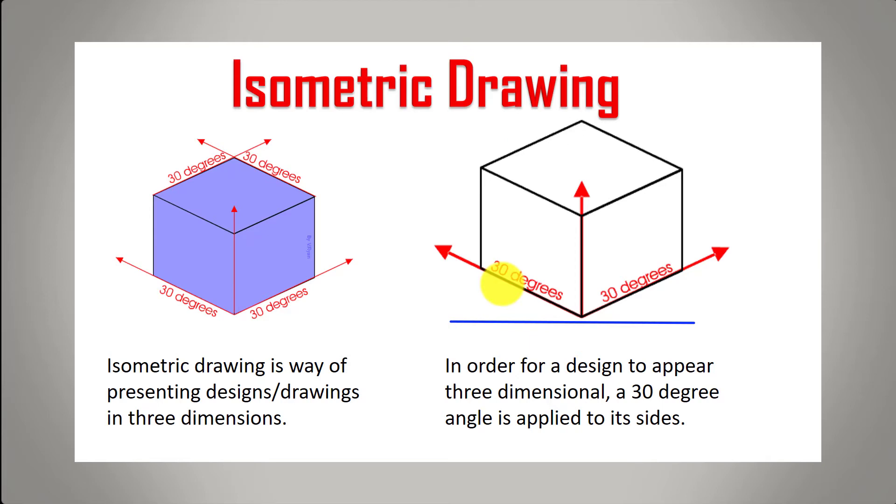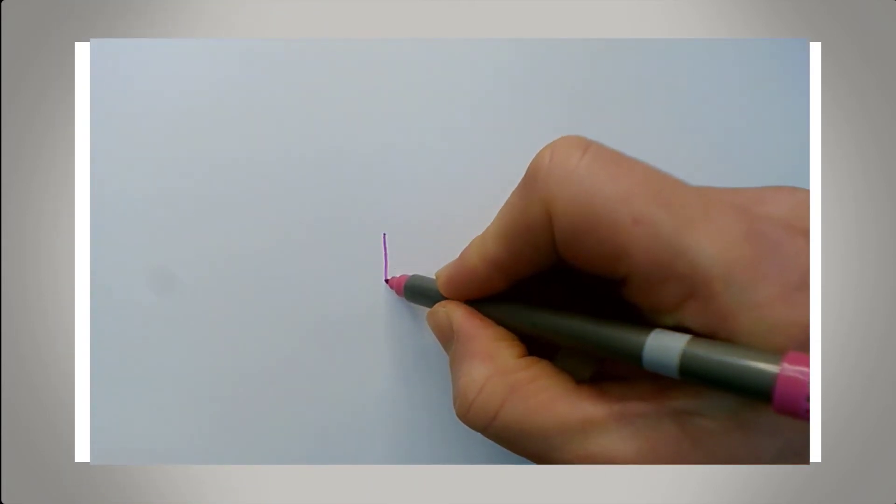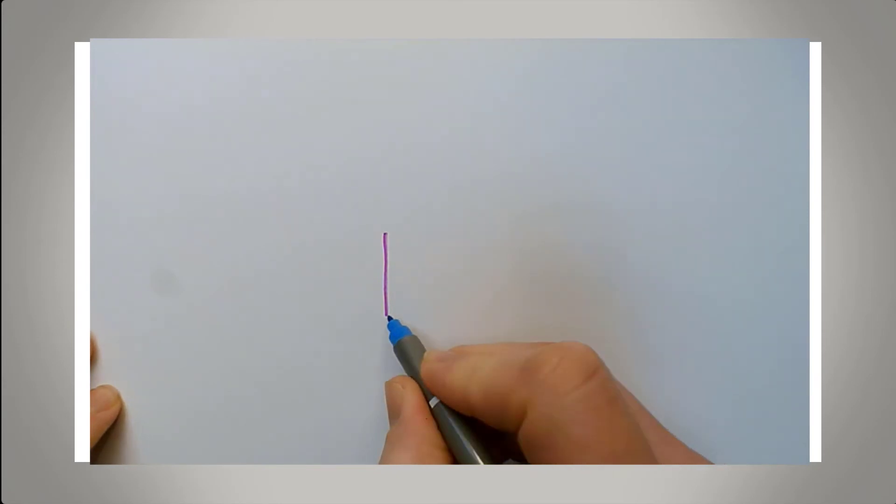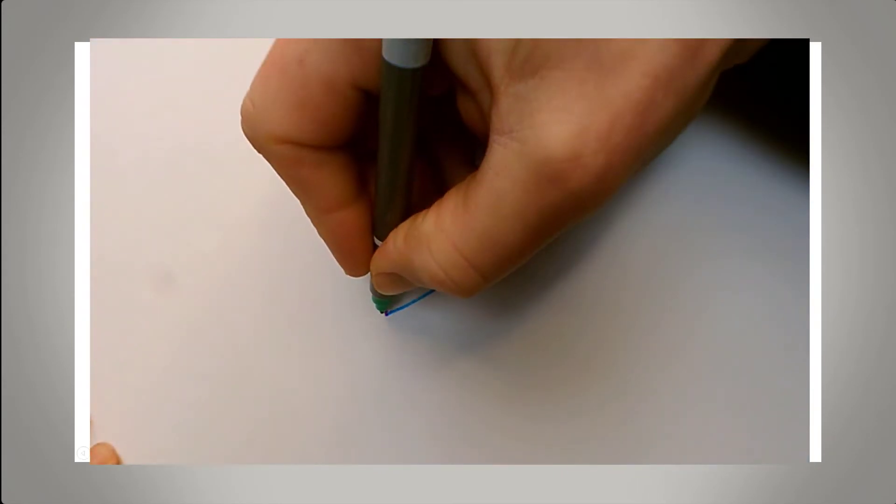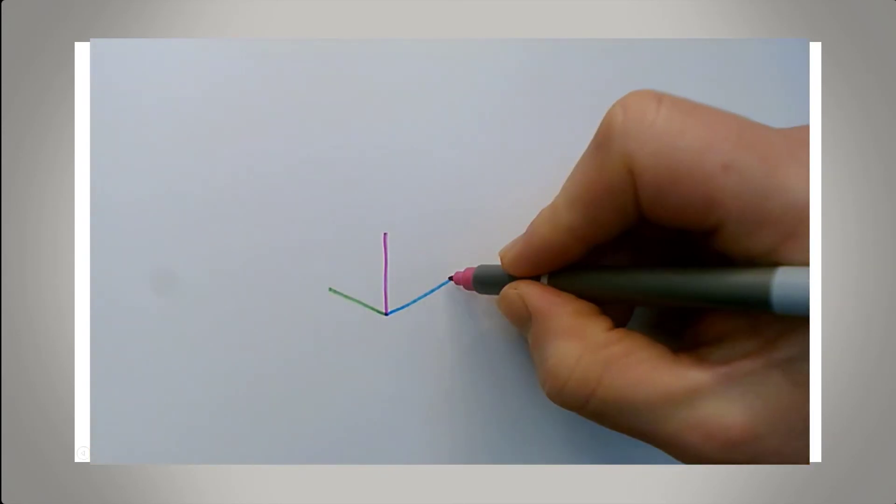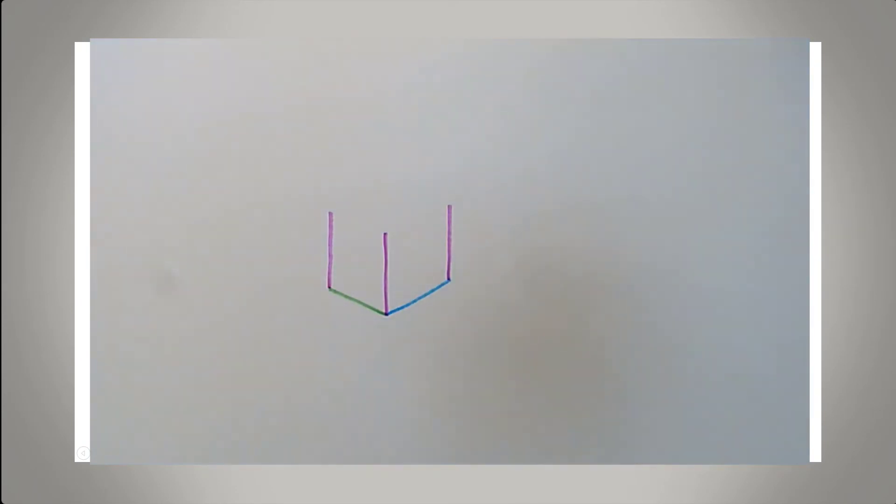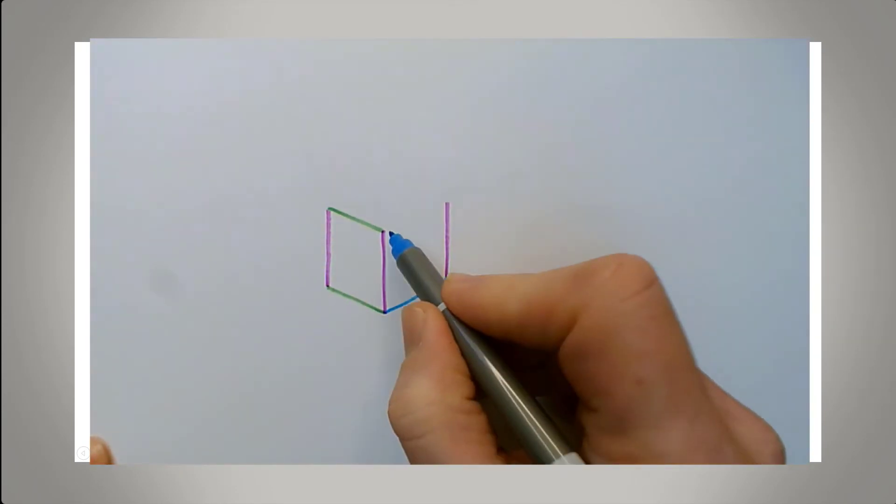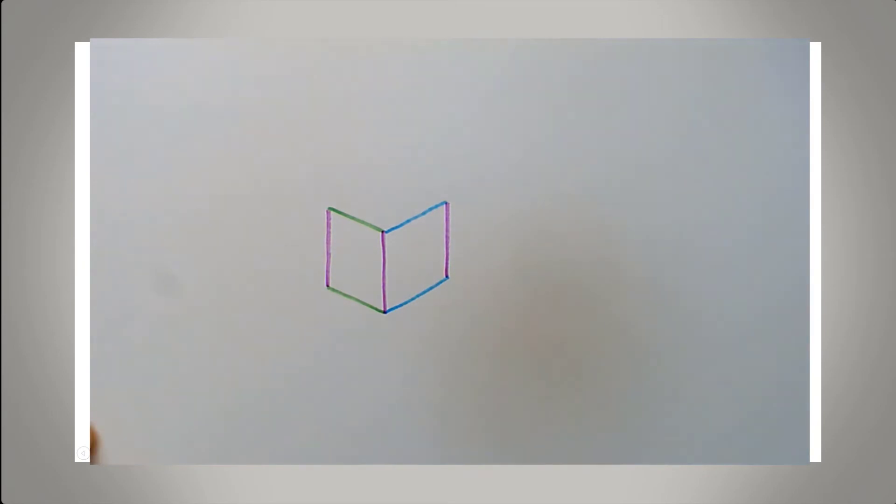When you're drawing a cube you start off with the front corner line. I've used three different colours so you can see that an isometric cube is made up of three sets of parallel lines. Once I've done the front corner I then use the green and blue lines to do the first 30 degrees. And it almost looks like a book when I've done the other two sides.